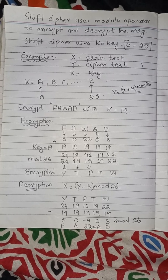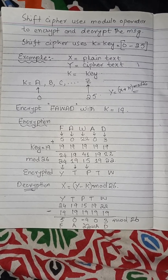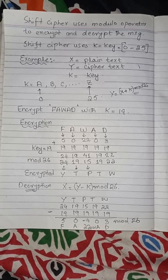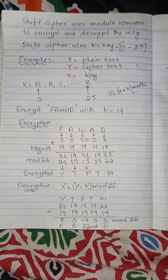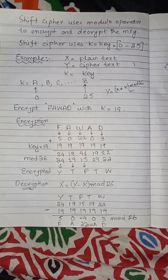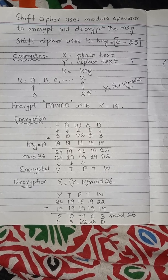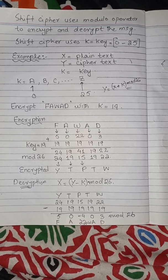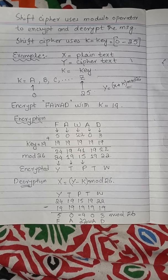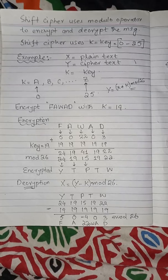Hello guys, I hope you are doing well. Here we will explain about the shift cipher. Shift cipher is a type of Caesar cipher that uses the modulo operator to encrypt and decrypt the message. It is one of the basic types of encryption techniques — basically a traditional, classical cryptographic technique.